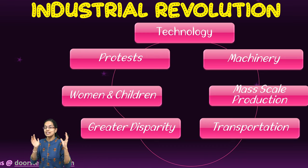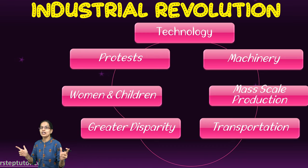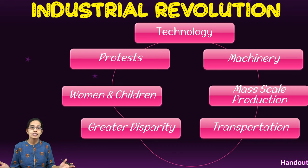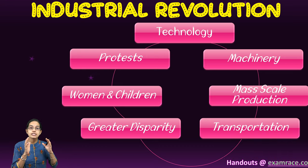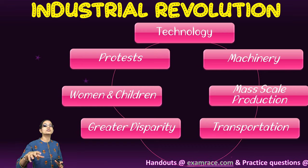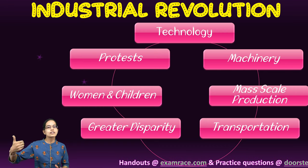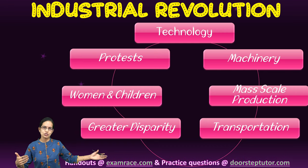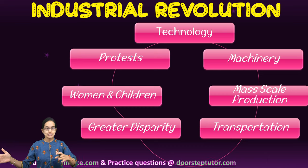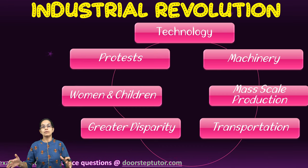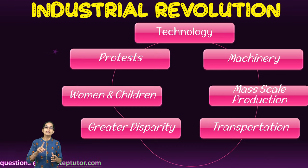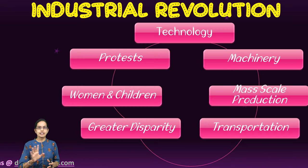When there is mass production, what is important is market. So what comes next is transportation — to transport the goods, firstly the raw material and secondly the finished products to and from their destination. Exports, imports, and transport were vital for trade to survive.